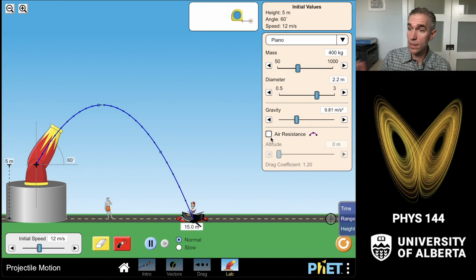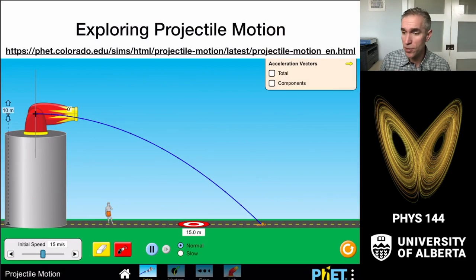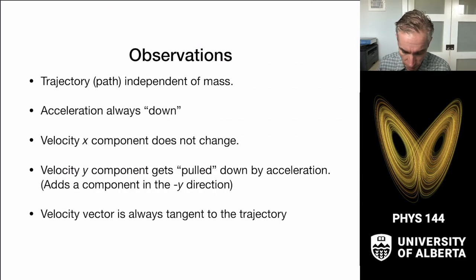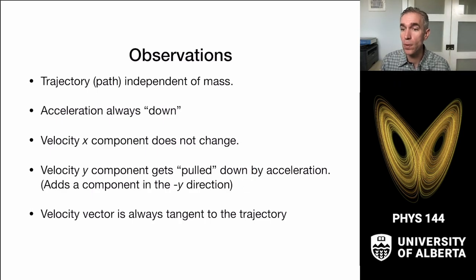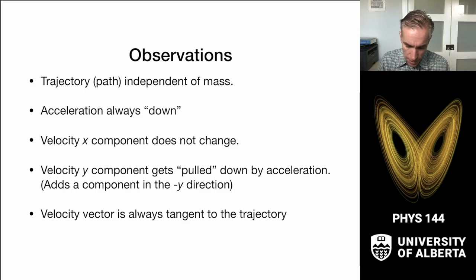To summarize the key points of projectile motion: the trajectory is independent of mass; the acceleration always points downward; the x component of velocity never changes; the y component gets pulled down by acceleration, adding in the negative y direction; and the velocity vector is always tangent to the trajectory.